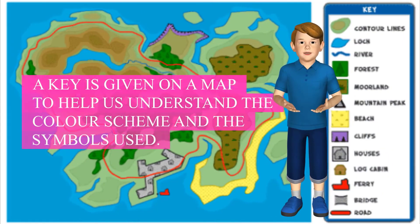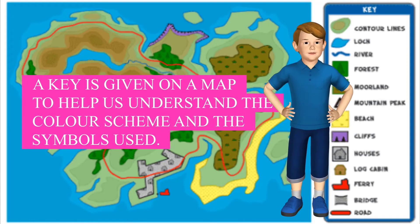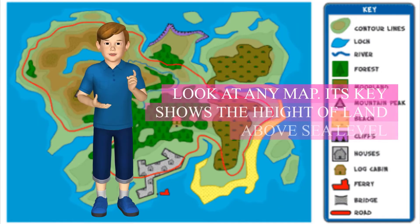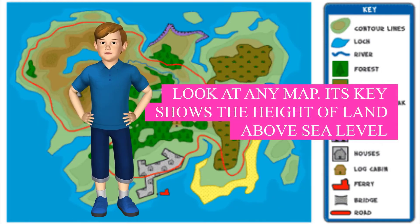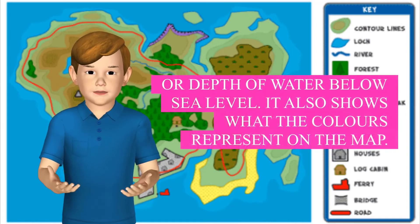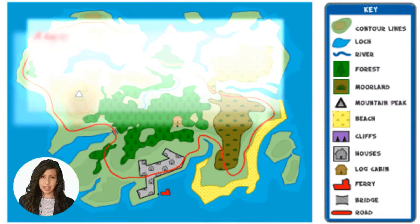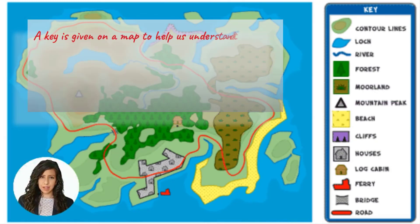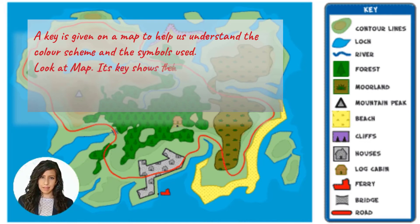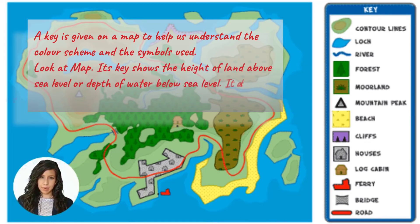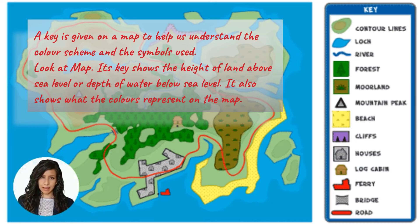A key is given on a map to help us understand the color scheme and the symbols used. Look at any map — its key shows the height of land above sea level or depth of water below sea level. It also shows what the colors represent on the map. Map par ek key di jati hai jo color scheme aur symbols ko samajhne mein humari madad karti hai. Iski key, sea level se bhoomi ki ucchai ya sea level se niche pani ki gehraai ko darshati hai. Key, maps par colors ko dikhati hai.